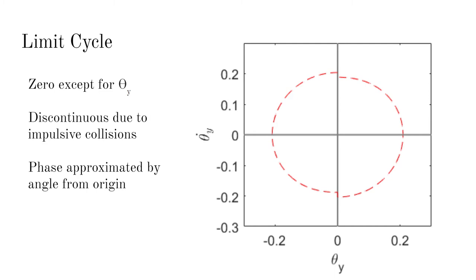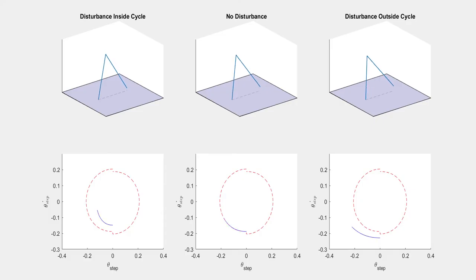The parallel controller forces all states of the same phase to undergo the same accelerations. Here is the behavior of the system when just the parallel controller is used. Once on the limit cycle, the system stays on the cycle.